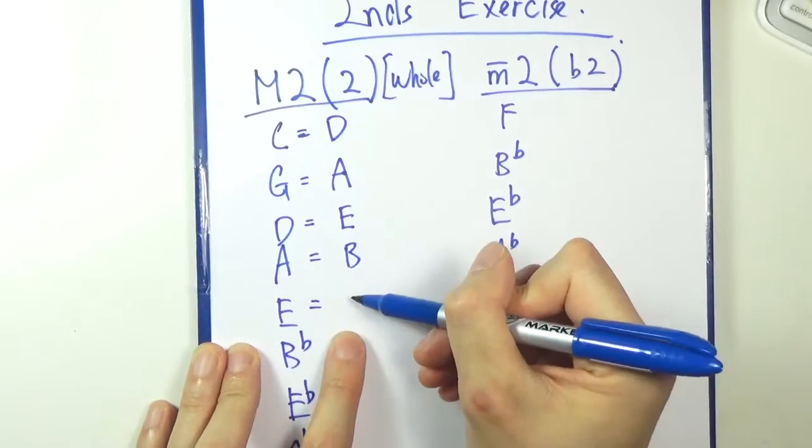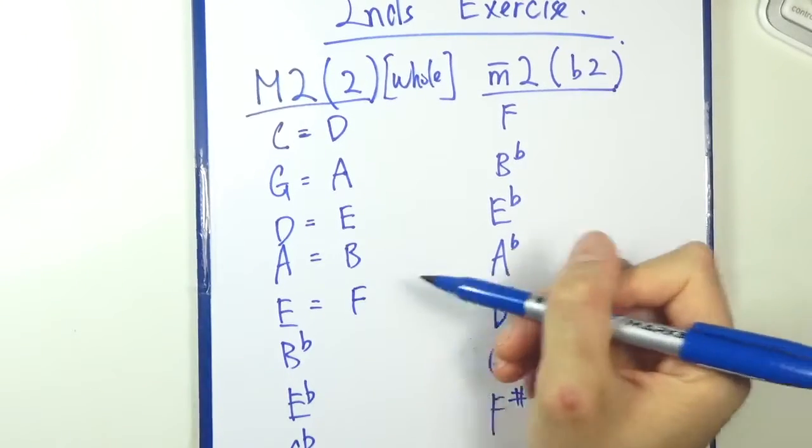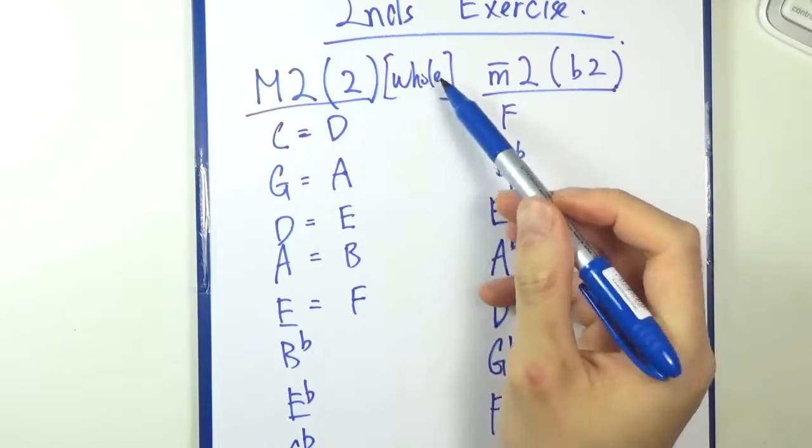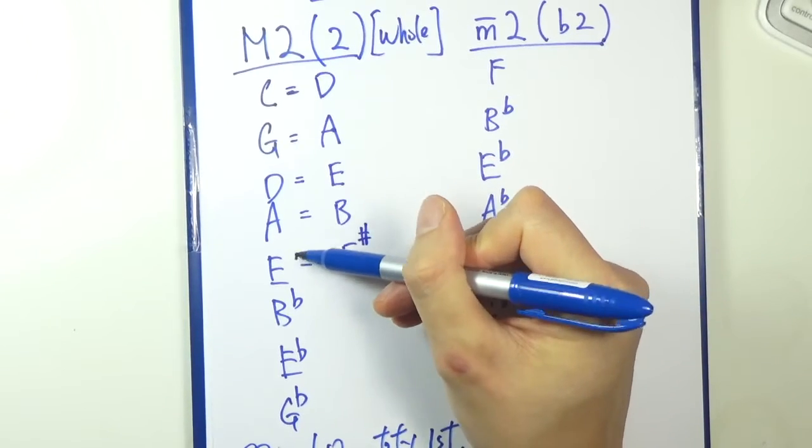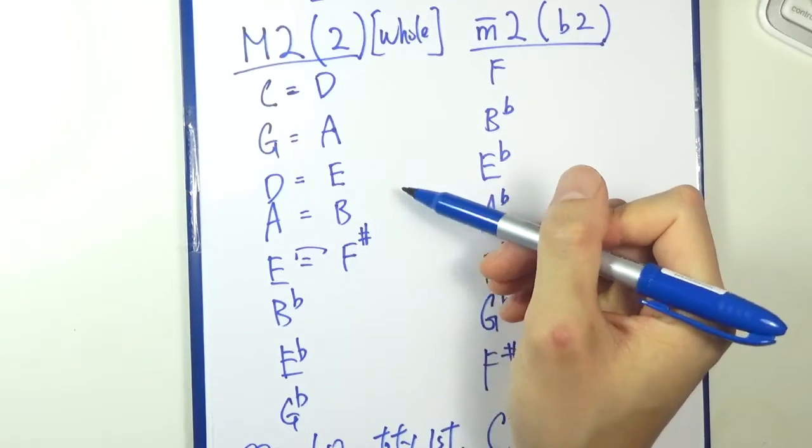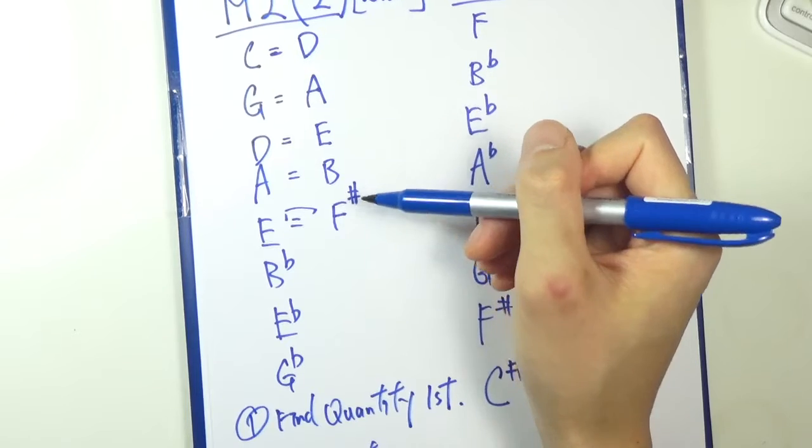Be careful over here. E, so quantity-wise it's just F. But we need a whole step, so it should be an F sharp, because they're only a half step apart originally. And we want to make that a whole step.